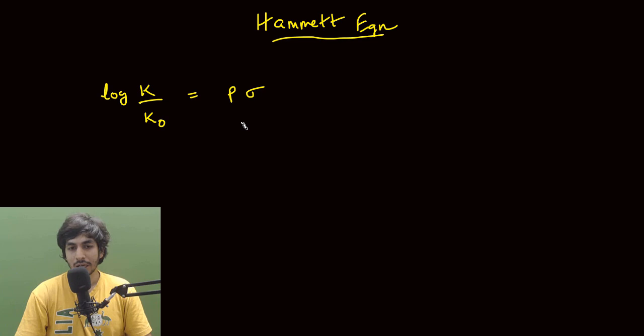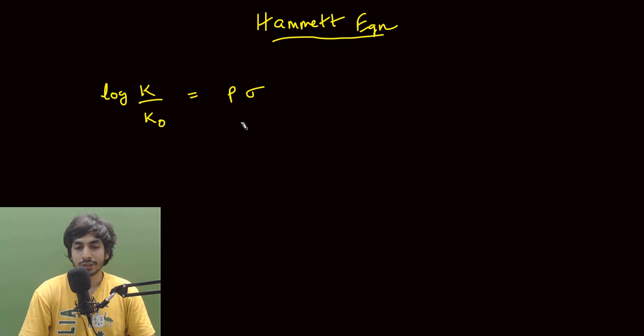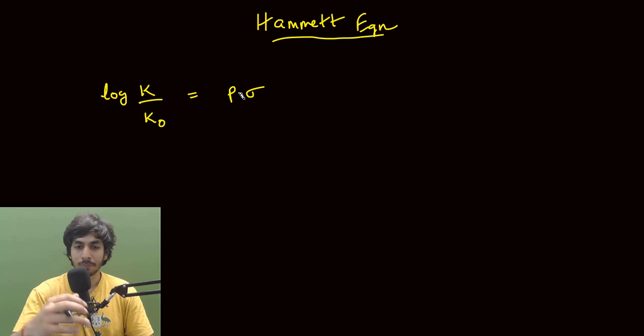Now if you look at this equation from a chemist's point of view, you are not able to understand anything. So let's try to break down what the equation means. What is this k value? What is k₀? What is ρ (rho)? What is σ (sigma)? And how can you apply this particular equation from a chemist's point of view?